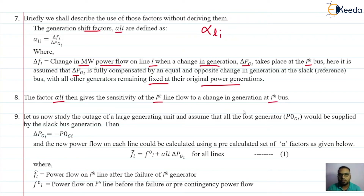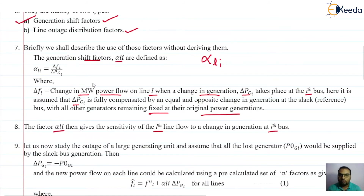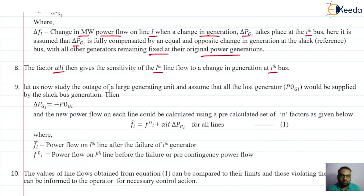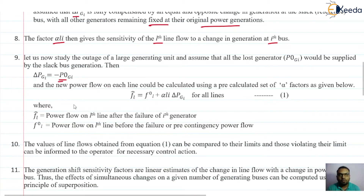The factor alpha_Li gives the sensitivity of the L-line flow to a change in generation at the ith bus. If there is an outage of the generator connected at the ith bus, the change in megawatt power flow on line L can be found using this factor called alpha_Li, or the Generation Shift Factor. Here we are getting the approximate value. Let us consider the outage of the ith unit — that outage or loss of the generator is taken by the generator at the slack bus.